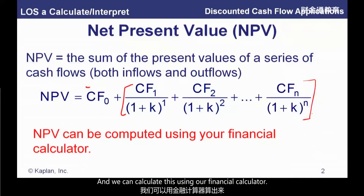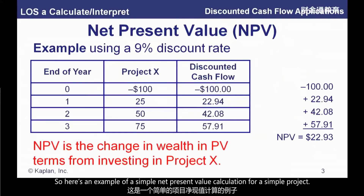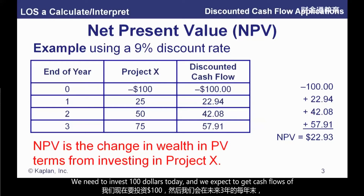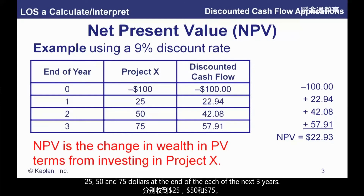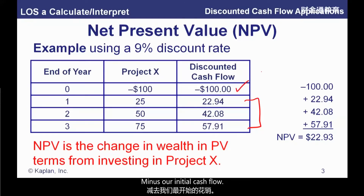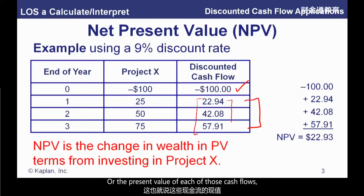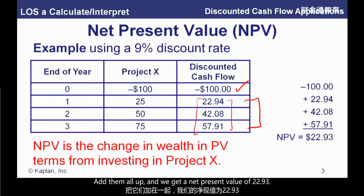We can calculate this using our financial calculator. Here's an example of a simple net present value calculation. We need to invest a hundred dollars today, and we expect to get cash flows of twenty-five, fifty, and seventy-five dollars at the end of each of the next three years. The net present value is the present value of these minus our initial cash flow. We discount at nine percent each of those future cash flows, get their present value in today's dollars, add them all up, and we get a net present value of twenty-two ninety-three.